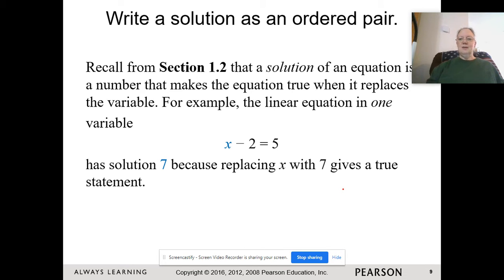So if we have a linear equation in one variable and we get a solution, we find a number that makes this equation true. In this particular example, if we replace x with 7, we get 7 minus 2 equals 5. We simplify the left and get 5 equals 5. This is a true statement. When we have one variable, we're going to end up with one solution.